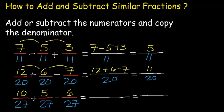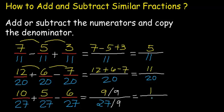For our third example, we have 10 over 27 plus 5 over 27 minus 6 over 27. 10 plus 5 is 15, minus 6 is 9. And copy the denominator, which is 27. This is not our final answer yet, because 9 and 27 can still be divided — 9 is common between the two. Divide the numerator by 9 and the denominator by 9: 9 divided by 9 is 1, and 27 divided by 9 is 3. So we have 1 over 3.